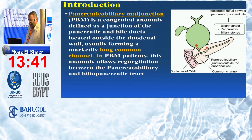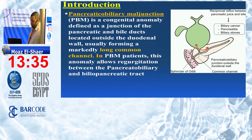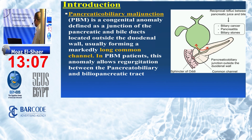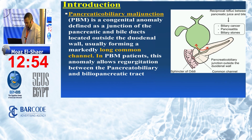So first, what is pancreatobiliary maljunction? It is a congenital anomaly defined as a junction of the pancreatic and bile duct located outside the duodenal muscle layer, before the sphincter of Oddi, forming a markedly long common channel. This anomaly allows regurgitation between the pancreatobiliary systems: pancreatic juice will reflux into the biliary tree and bile will reflux into the pancreas. This is the pathophysiology.